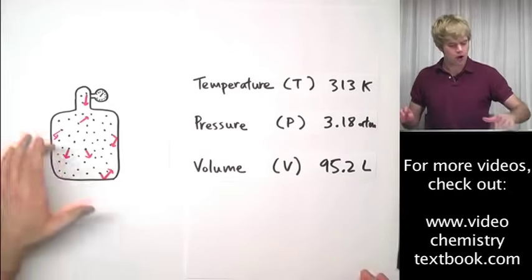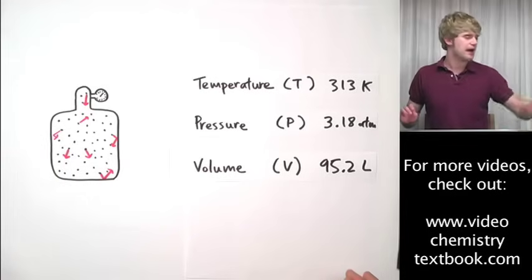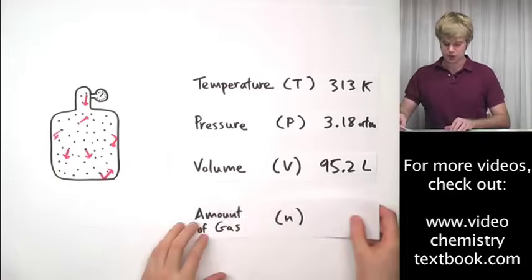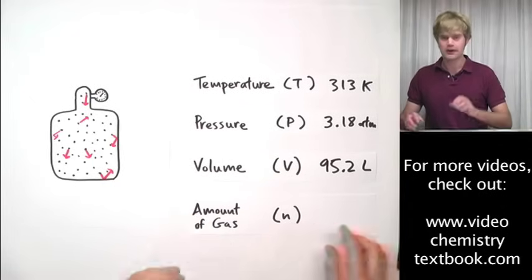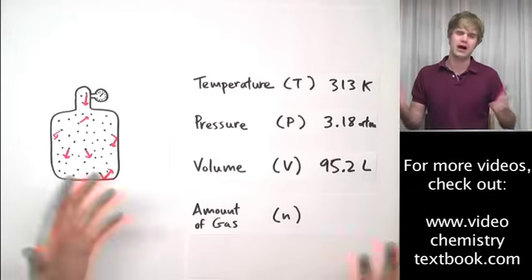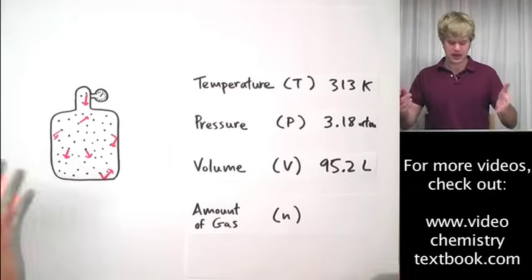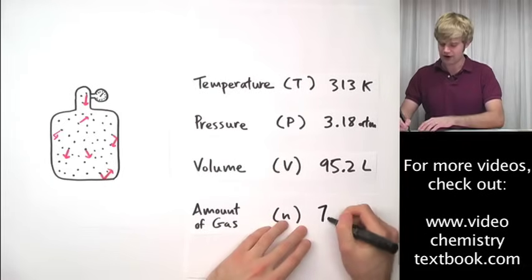And finally, look at these particles that I've drawn. There's a certain amount of gas that's in here. The amount of gas, which is abbreviated by the letter little letter n, is usually reported in moles, which is a convenient measure of how much of something we have. So we could say that the amount of gas in this tank is 7.5 moles.